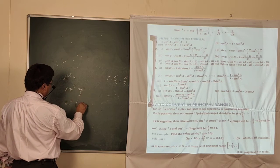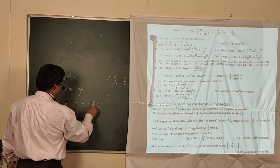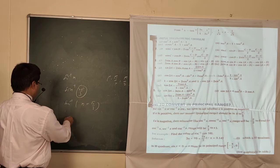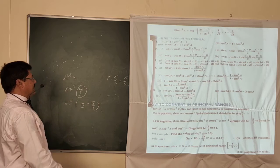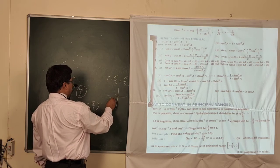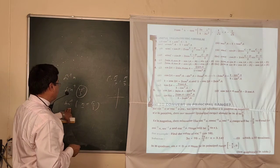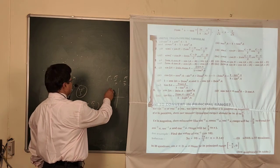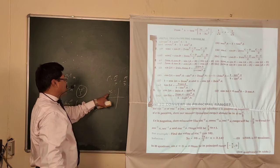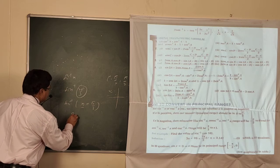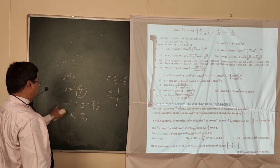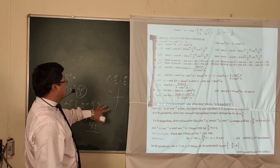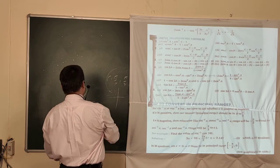sin⁻¹(2π/3): break 2π/3 as π - π/3. You know that π - θ is the supplementary angle formula. In the second quadrant, there is no conversion of the trig function name — sin stays sin, cos stays cos, tan stays tan — but the sign changes according to the quadrant. Since 180 - θ is in the second quadrant where sin is positive, you get sin⁻¹(2π/3) = sin⁻¹(π/3). So the principal value is π/3.